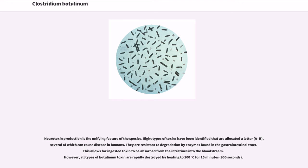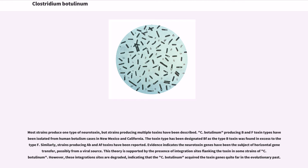Neurotoxin production is the unifying feature of the species. Eight types of toxins have been identified that are allocated a letter, several of which can cause disease in humans. They are resistant to degradation by enzymes found in the gastrointestinal tract. This allows for ingested toxin to be absorbed from the intestines into the bloodstream. However, all types of botulinum toxin are rapidly destroyed by heating to 100 degrees Celsius for 15 minutes. Most strains produce one type of neurotoxin, but strains producing multiple toxins have been described.